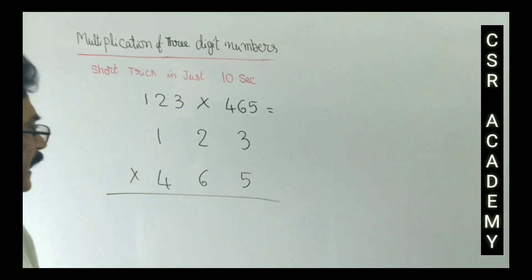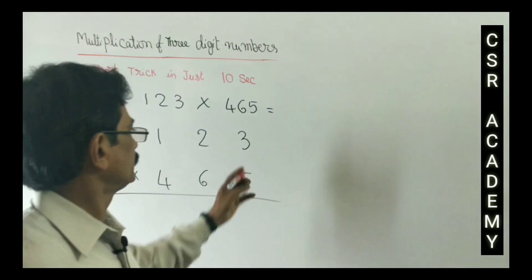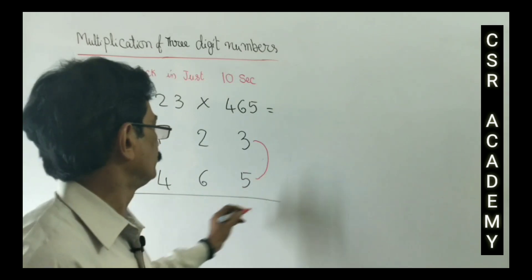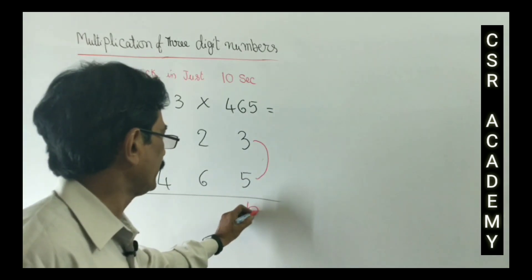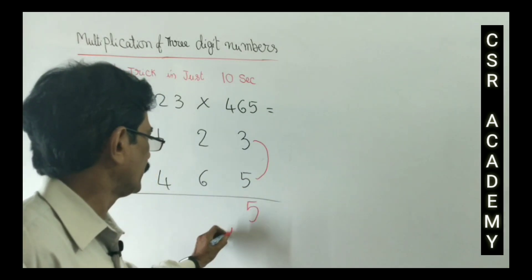First step: we take units place product, 3 into 5, 15. 5 right here, 1 in the down.